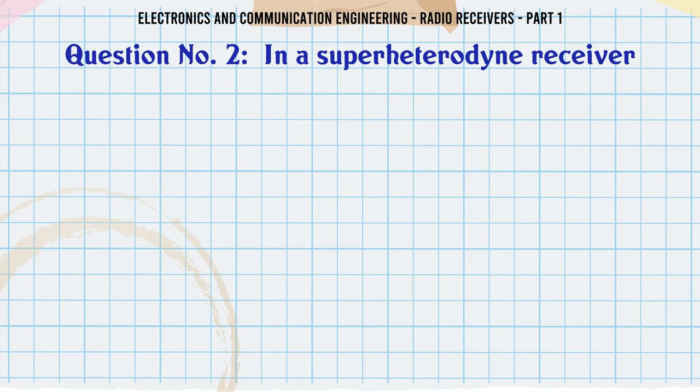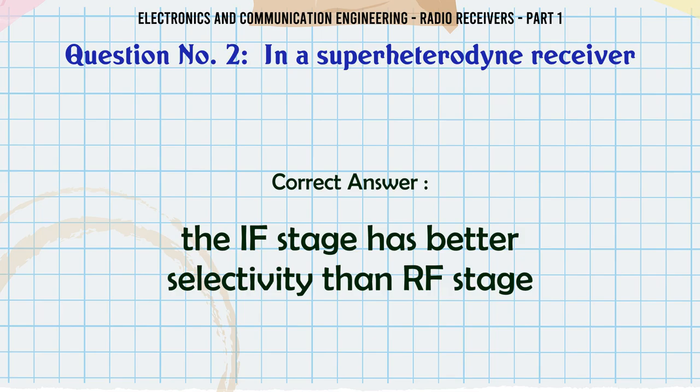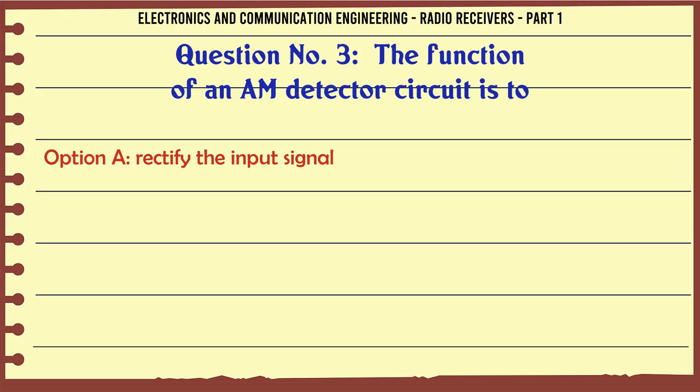In a superheterodyne receiver: a. The IF stage has better selectivity than RF stage. b. The RF stage has better selectivity than IF stage. c. The RF stage has same selectivity as IF stage. d. None of the above. The correct answer is the IF stage has better selectivity than RF stage.